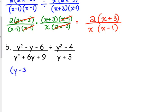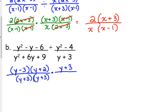So the first one, y minus 3 times y plus 2 over y plus 3 times y plus 3. As I mentioned, I'm going to factor and flip at the same time. So I'm flipping it. The y plus 3 is now in the numerator, and y squared minus 4 is y plus 2 times y minus 2.